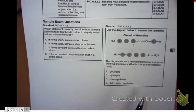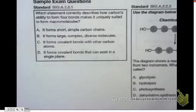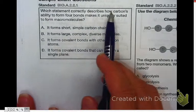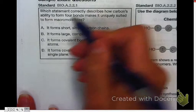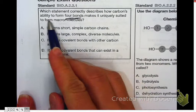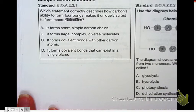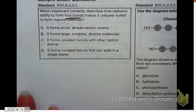The first one says, which statement correctly describes how carbon's ability to form four bonds makes it uniquely suited to form macromolecules? So the four bonds, we're looking at that.